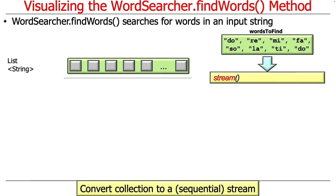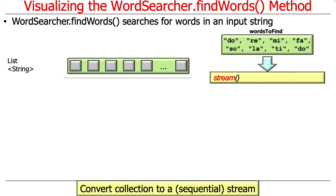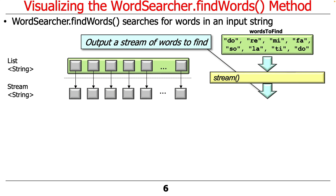The first thing we do is convert that collection — we talked earlier about collections and how you can convert from a collection into a stream. We convert that collection into a sequential stream just by calling dot stream. Now what we have is a stream of words that we want to find. You can see how I visualize this: this is the list, which is a collection, and now we have a stream.